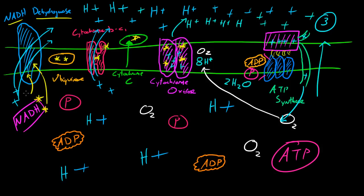per electron, one hydrogen ion is going to be pumped out to the other side of the membrane, which is the inner membrane.